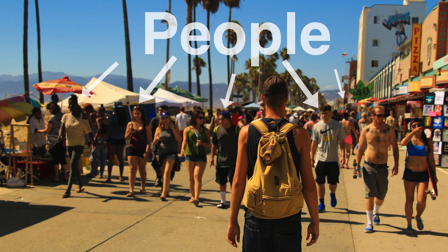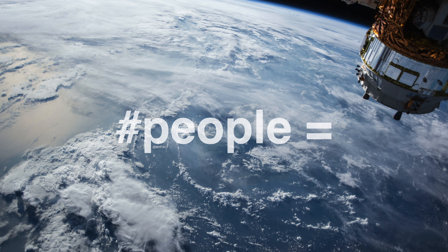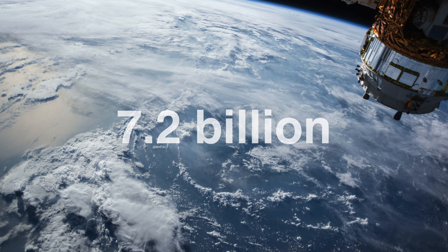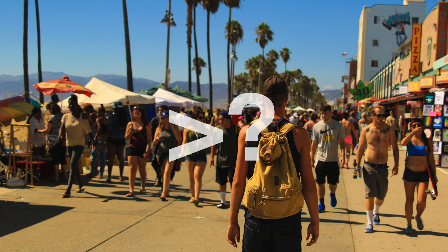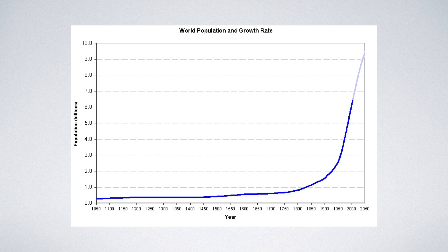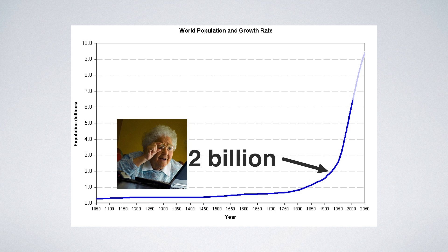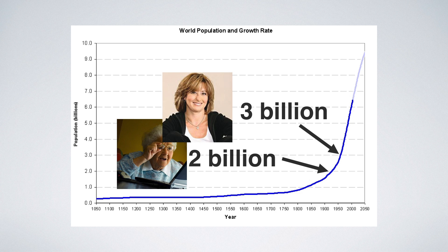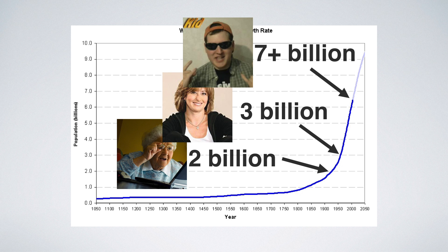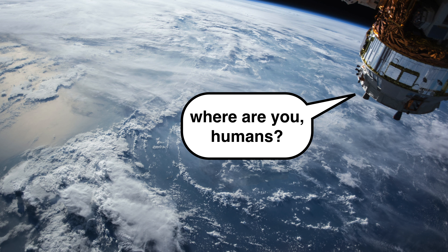It all starts with people. There are around 7.2 billion of them. A lot? Historically speaking, yes. Our grandparents were born in a world of 2 billion, our parents in one of 3 billion, more than double that, and here we are.